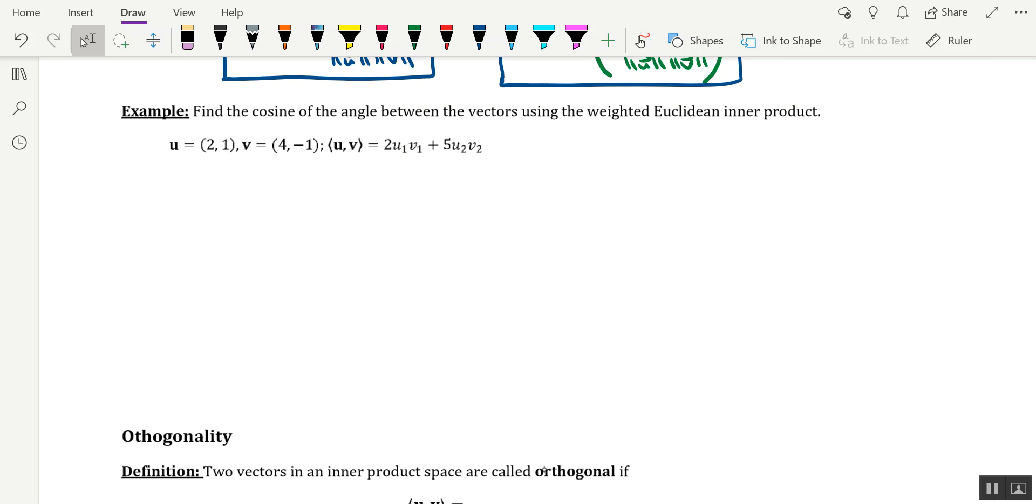What is going on, linear algebros? In this video, I'm going to help you find the cosine of the angle between these two vectors, u and v, under the weighted Euclidean inner product, which is defined right here.